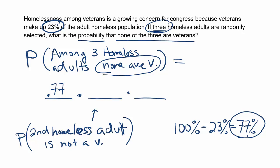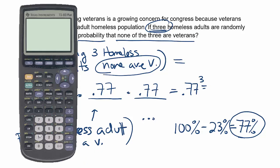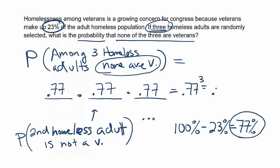So we go ahead and put 0.77 for the second person selected not being a veteran, and the same for the third — 0.77. Our final answer is 0.77 to the third power, using the independent multiplication rule of probability. Working that out, 0.77³ rounded to three decimal places is 0.457. So the approximate solution is 0.457, or about a 45.7% chance that none of the three are veterans.